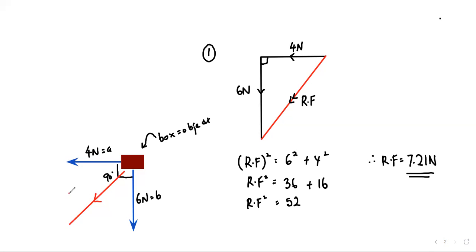The resultant force is the direction of movement. To solve this, start from one point, draw force A in the same direction with the same value, then at the end of force A continue with force B. Draw a straight line from the starting point to the end to get the resultant force. This method is similar to identifying displacement — it is a vector quantity.